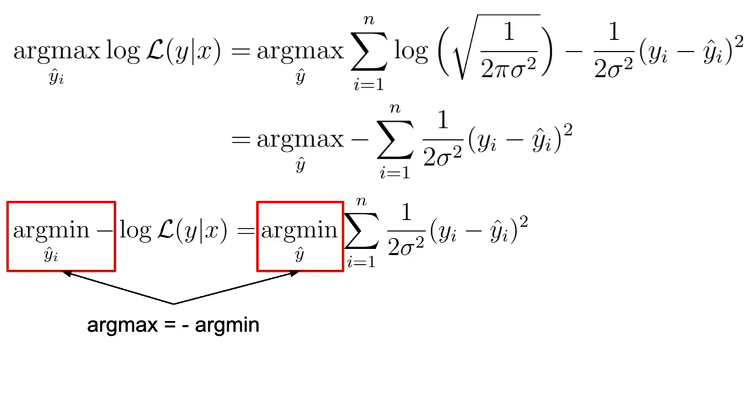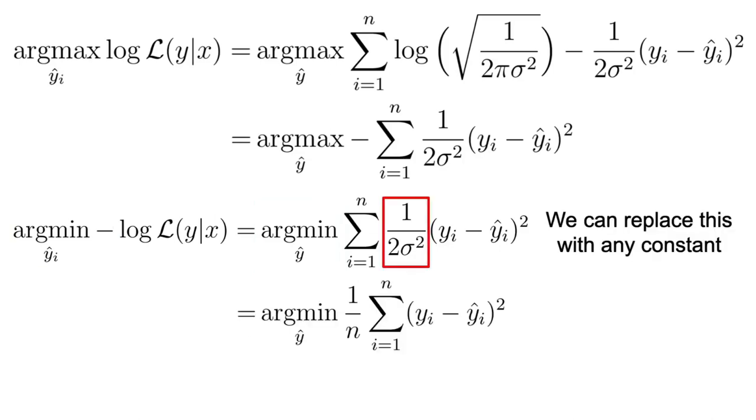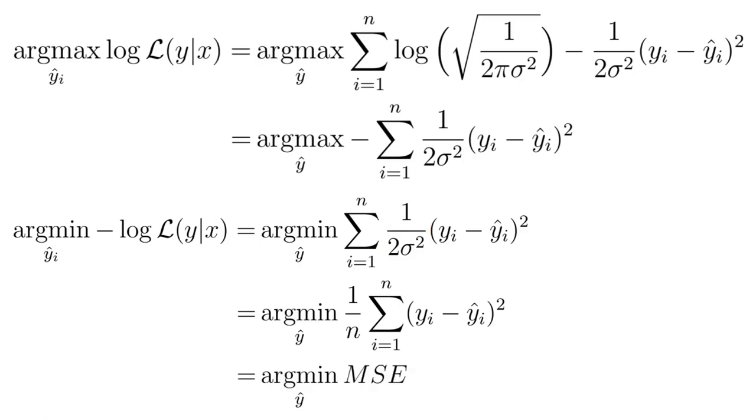To finally obtain the mean squared error loss function, we can again ignore the sigma squared term, since it does not depend on y hat, and scale everything by one over n, the number of examples. And hooray, here we have it, the mean squared error loss function.